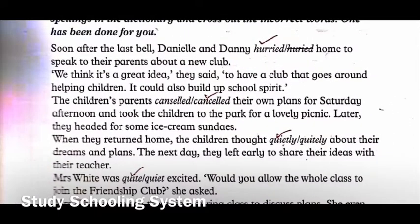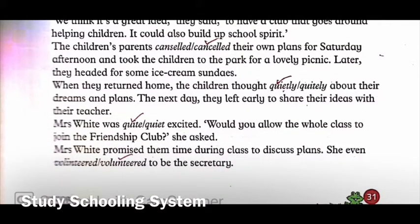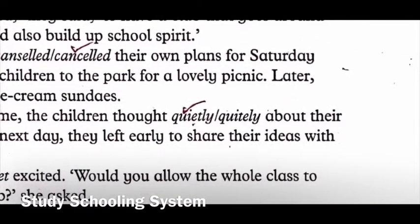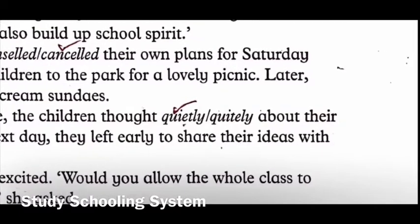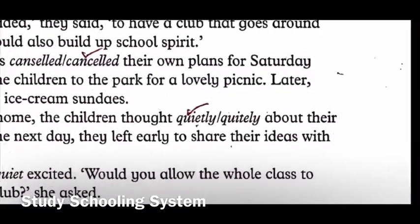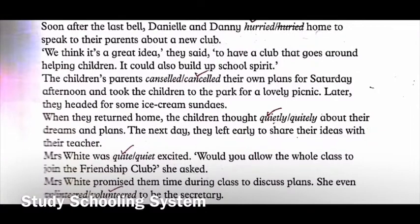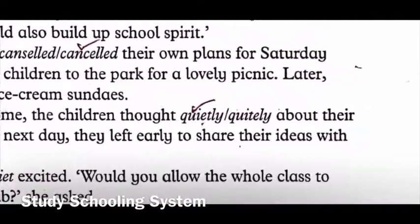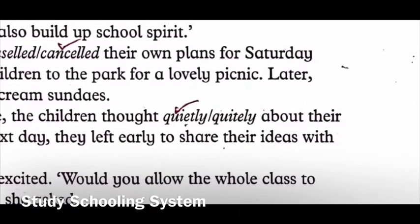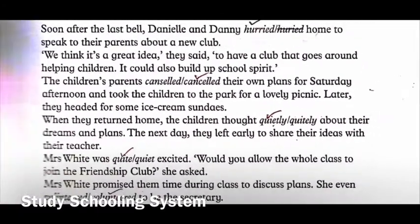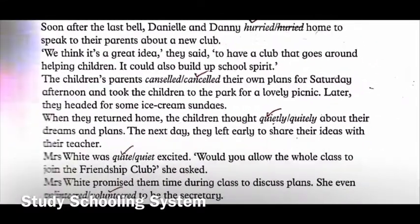And took the children to the park for a lovely picnic. Later they headed for some ice cream Sundays. Now the next paragraph: when they returned home, the children thought quietly/quietly about their dreams and plans. One quietly has E before the T and the other has E after the T. The one we want means silently, so you will cross out the second quietly.